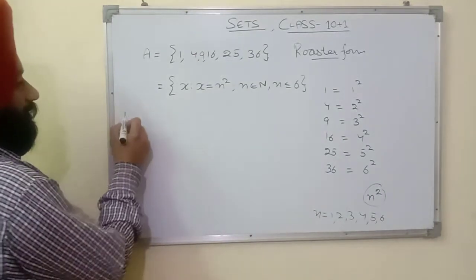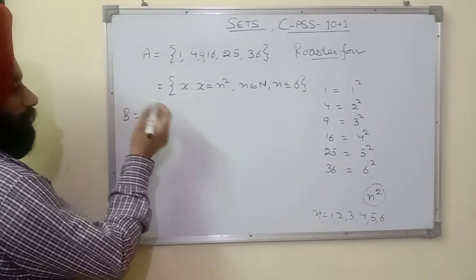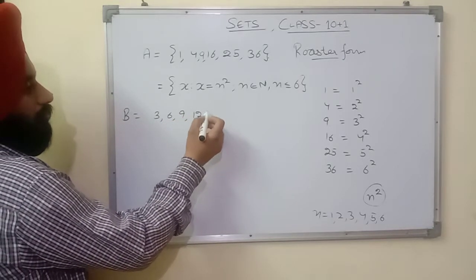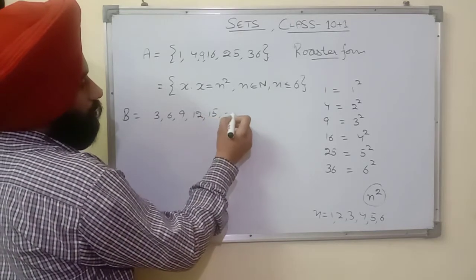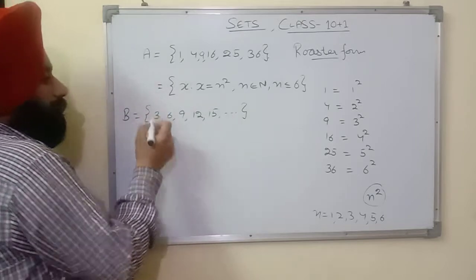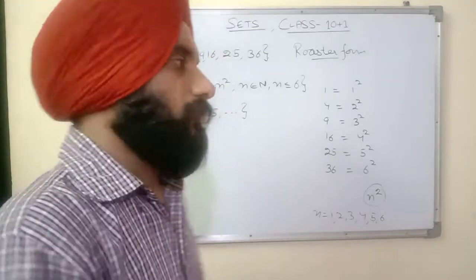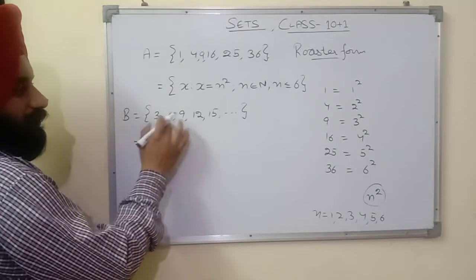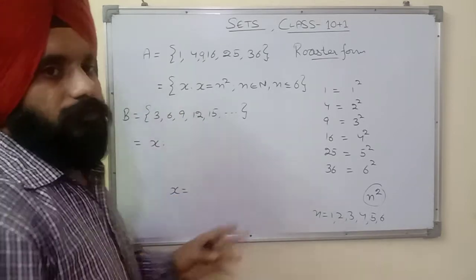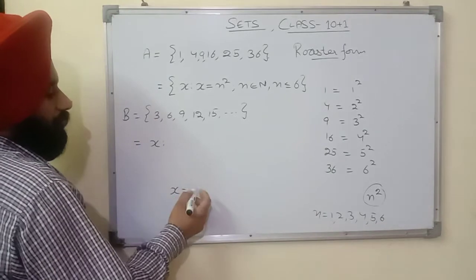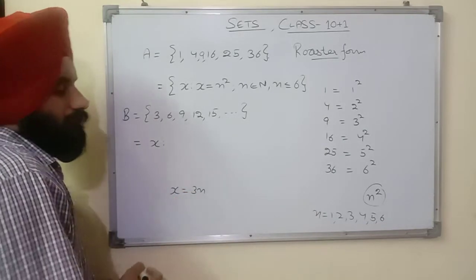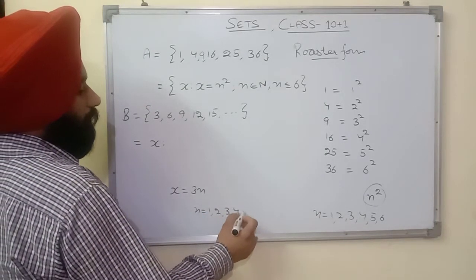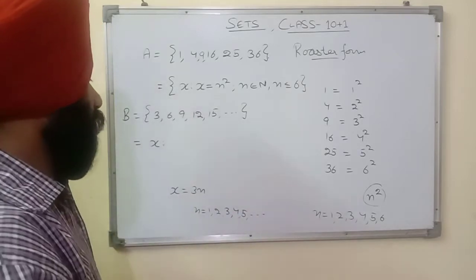Let us take one more example. Set B = {3, 6, 9, 12, 15, ...} and so on. This is an infinite set. Now x such that... what is x here? 3, 6, 9, 12 — these are multiples of 3. To write multiples of 3 it will be 3n, where n is a natural number 1, 2, 3, 4, 5, and so on.